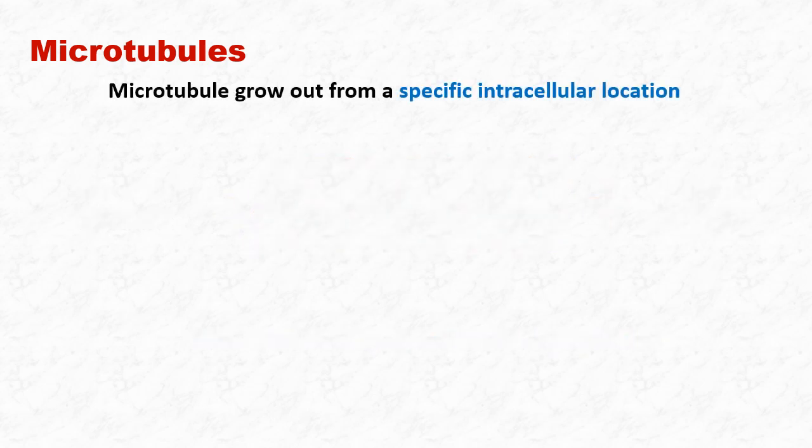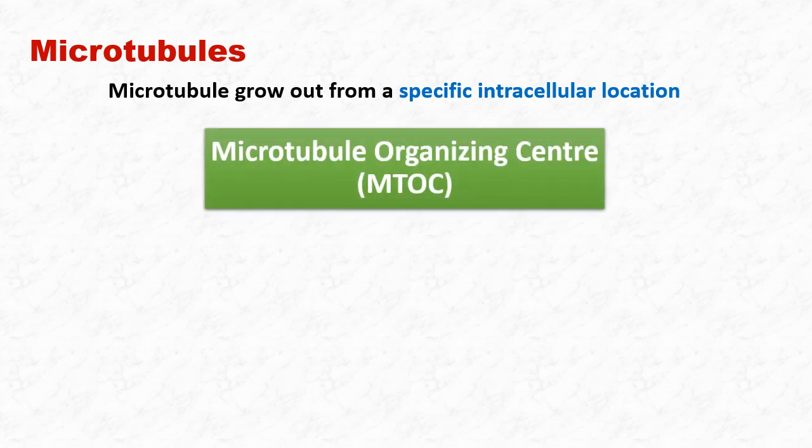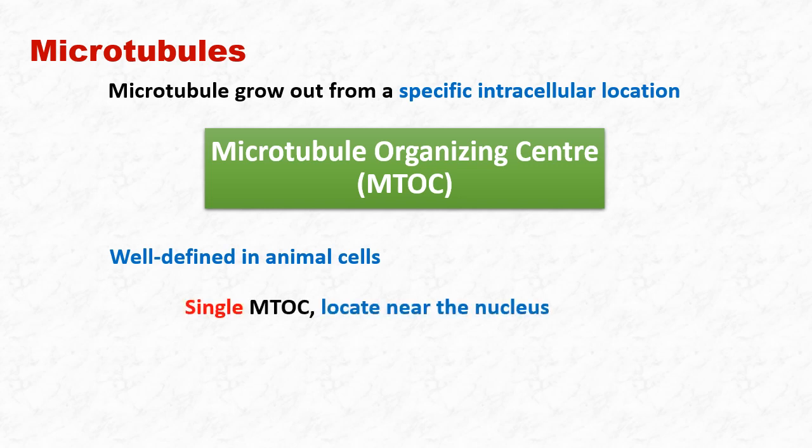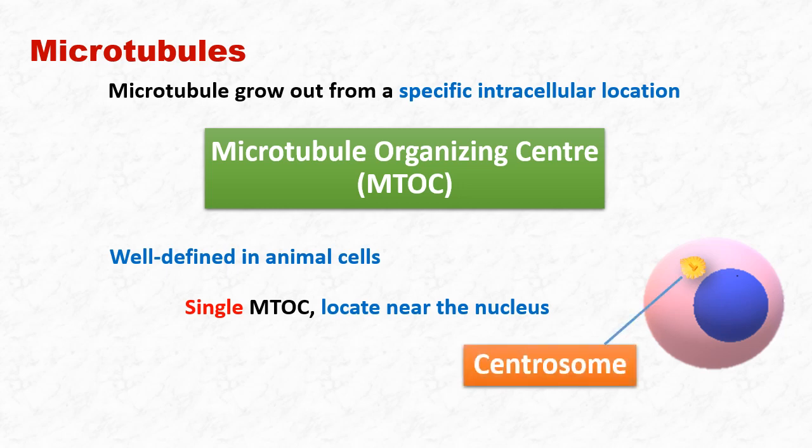Microtubules grow out from a specific intracellular location. This intracellular location is known as the microtubule organizing center. Microtubule organizing center is well defined in animal cells. There is a single such center in animal cells, and it is located near the nucleus. This microtubule organizing center in animal cells is known as centrosome.